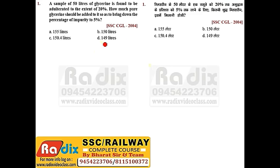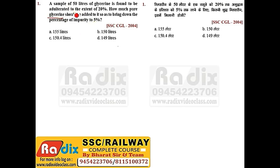Question number 1. A sample of 50 liters of glycine is found to be adulterated to the extent of 20%. How much pure glycine should be added so as to bring down the percentage of impurity? We are adding glycine, so the water content of the mixture will never change. That is the key concept.